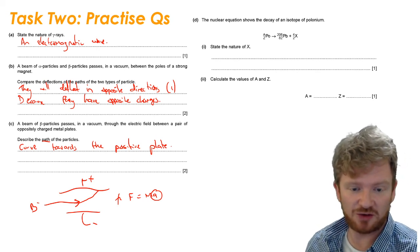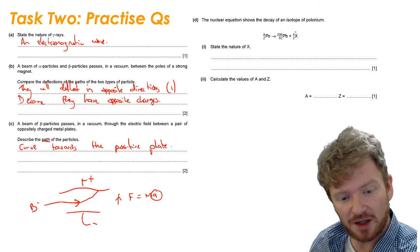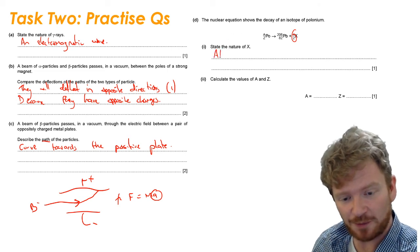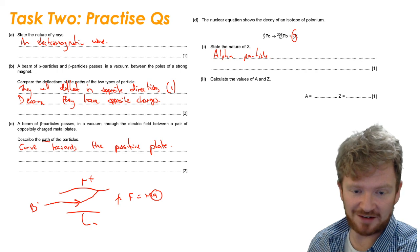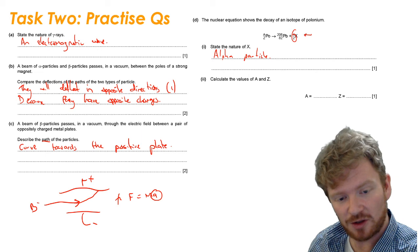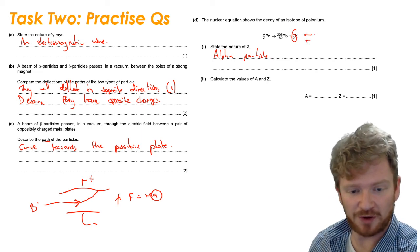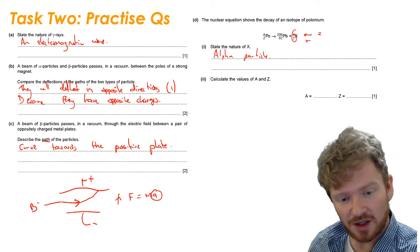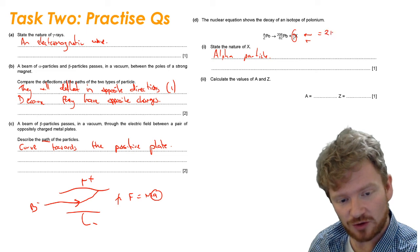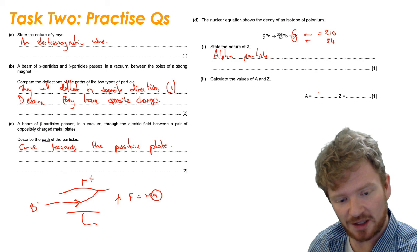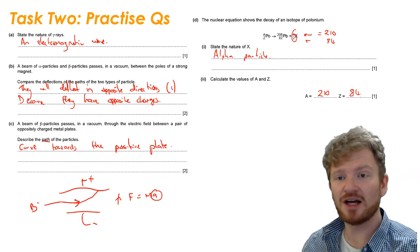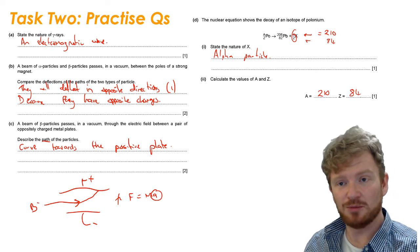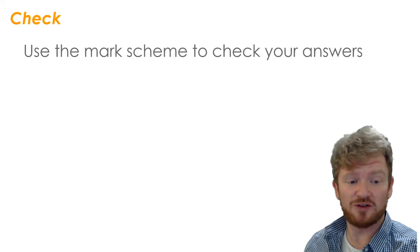Part D: The nuclear decay equation shows the decay of an isotope of polonium. State the nature of X. I've got a 4 and a 2 here, so X is an alpha particle, or you can say a helium nucleus. Now we need to calculate the values of A and Z. The top row on both sides has to be equal and so does the bottom row. On this side, my top row, I have 206 and 4, so that gives me 210 on the top row. My bottom row, I've got 82 and 2, so that gives me 84. So this polonium must be 210 for its A number, 84 for its Z number. What I want you to do now is have a go at some additional practice questions. You can mark them yourselves and then come back to me with any questions or concerns that you might have.